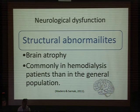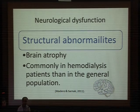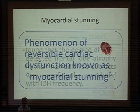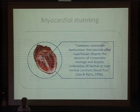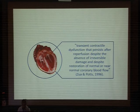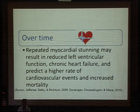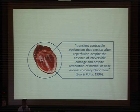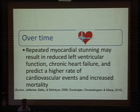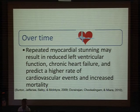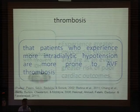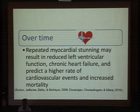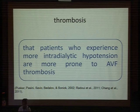Neurological dysfunction and structural abnormality, including brain atrophy, is common among hemodialysis patients. Patients with recurrent hypotensive attacks have been found to have greater brain atrophy than others. Myocardial stunning is a phenomenon of transient contractile dysfunction that persists after a reversible ischemic insult. This is common among hemodialysis patients who experience hypotensive attacks with repeated myocardial stunning, ultimately leading to reduced systolic function, chronic heart failure, and increased mortality. Patients with intra-dialytic hypotension are also at increased risk for thrombosis.